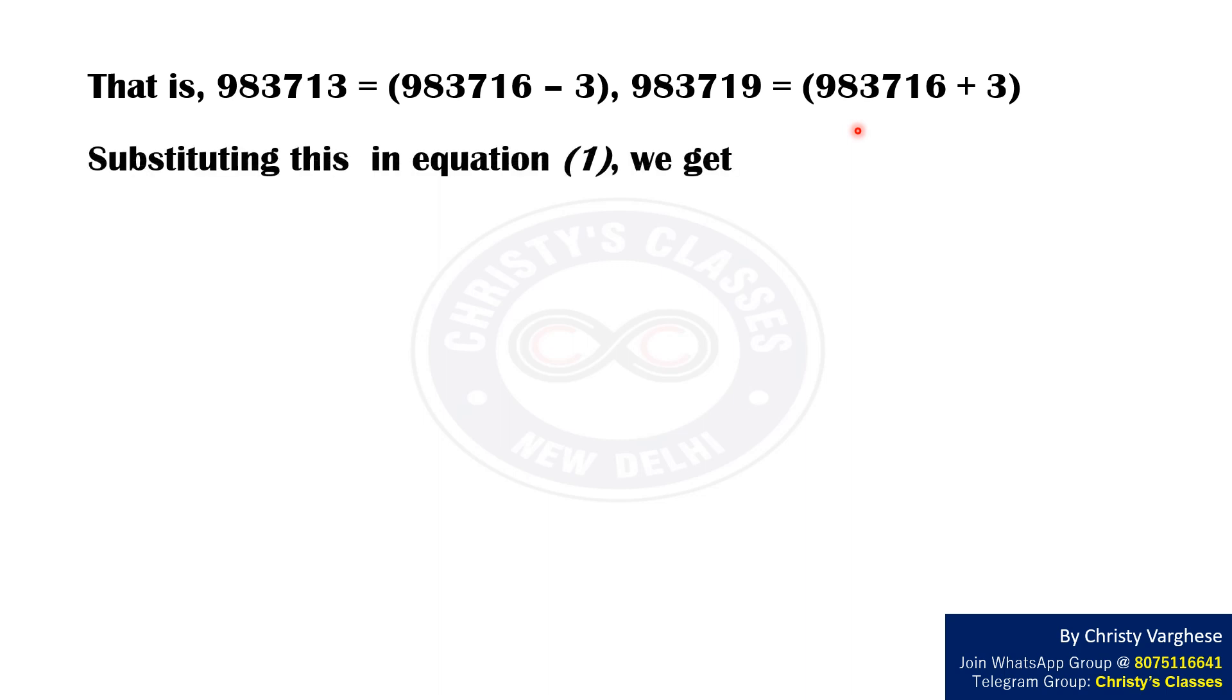Substituting these in equation 1, we get (983716 - 3)(983716 + 3) + x = 983716².